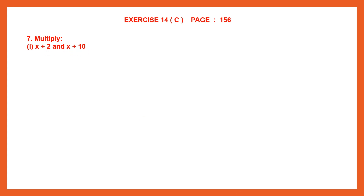So how do we do this? Let's look at the first binomial and take only the first term from that. I'm going to write down the first term and multiply it with the second binomial, the whole thing, that is x plus 10. Then I'm going to take the second term of the first binomial, that is 2, and multiply it with the whole of the second binomial.